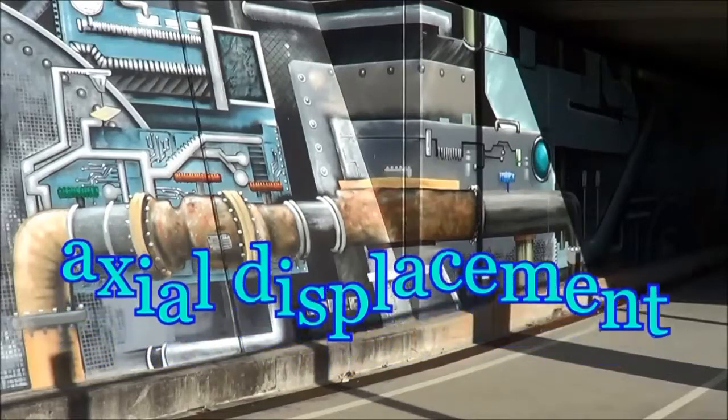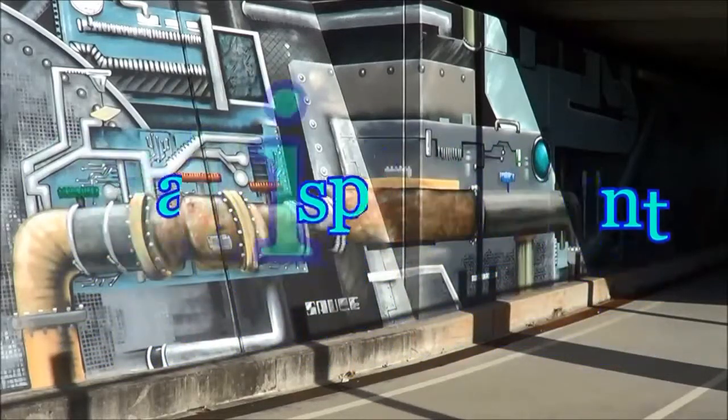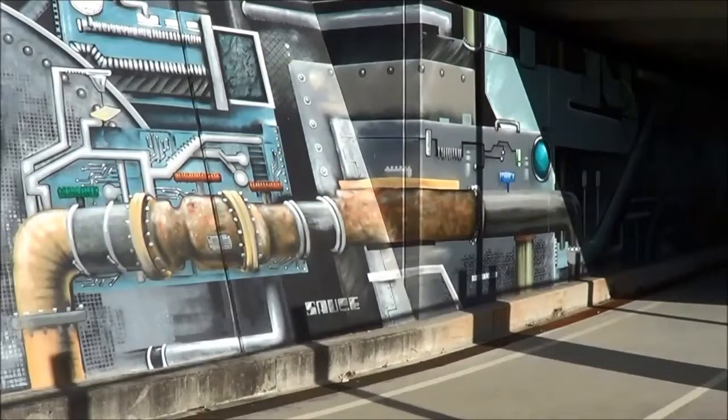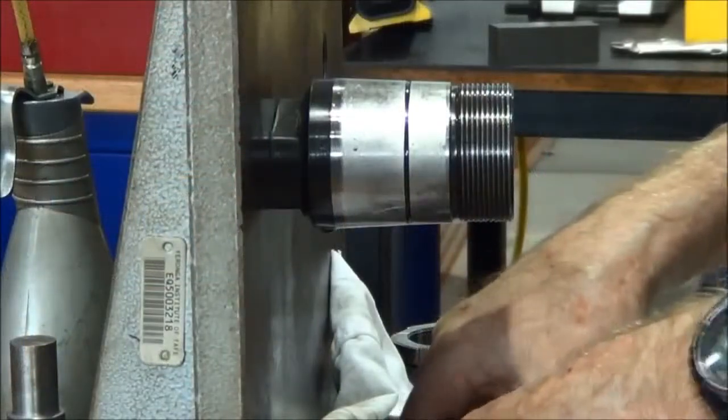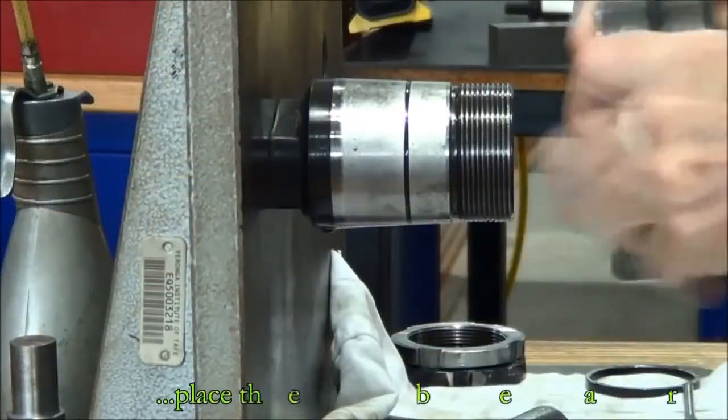We're going to refit the bearing, but this time we're going to use a different method, a method called axial displacement. Here what we're going to do is position the bearing onto the shaft.